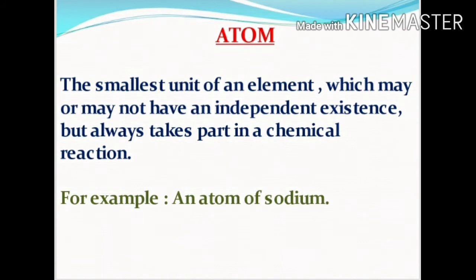If matter is made of only one kind of element, then the smallest unit of that element is called an atom. An atom is the smallest particle of an element that takes part in chemical reactions — that is, the smallest unit of an element which may or may not have an independent existence but always takes part in a chemical reaction. For example, an atom of sodium.